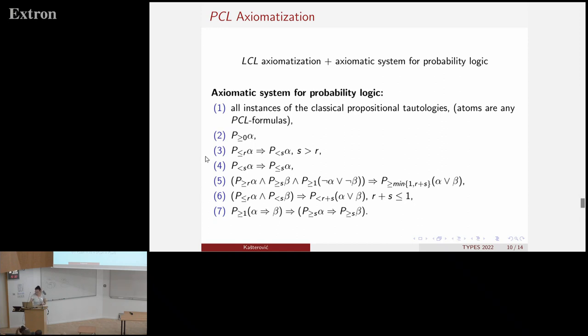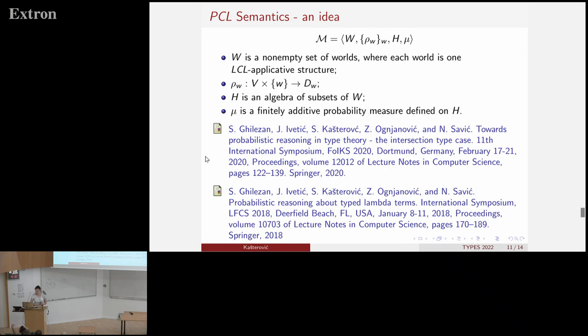And the last part of this PCL is the semantics. That is, I'm going to give the idea of the semantics. As I said, it's still an ongoing work. So we want to define the semantics as a structure where we have first the set of possible worlds. And the idea is that each possible world will represent an LCL applicative structure.